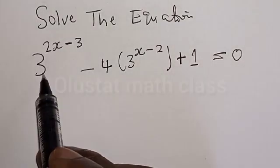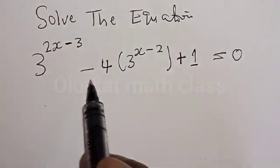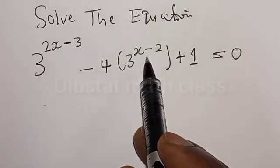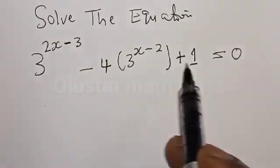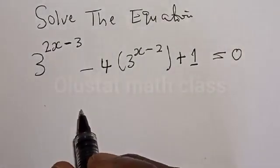Solve the equation: 3 raised to the power (2x minus 3) minus 4 times 3 raised to the power (x minus 2) plus 1 is equal to 0.